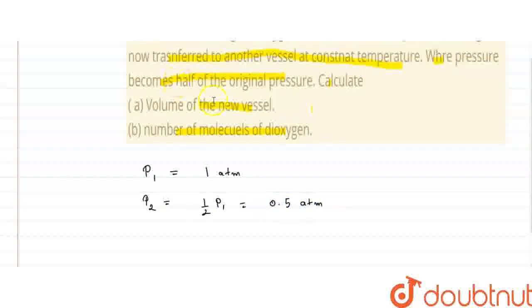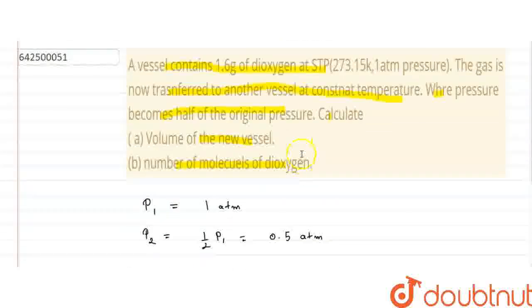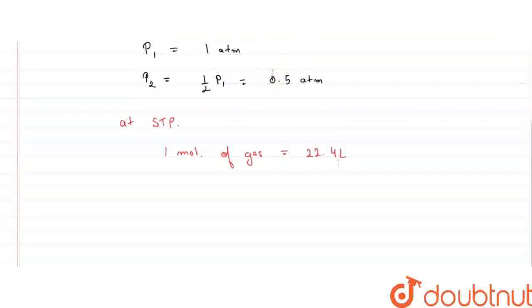So, now we know that at STP, 1 mol of gas is equal to 22.4 liters. We have oxygen gas. Since it is dioxygen, we know that in 1 mol, there will be 32 grams of dioxygen. Because 1 oxygen atomic mass is 16, so 2 oxygen means it will be 32. Therefore, 32 grams of O2 gas will be equal to 22.4 liters.